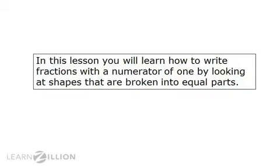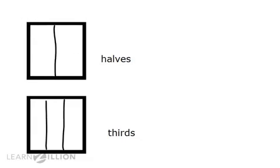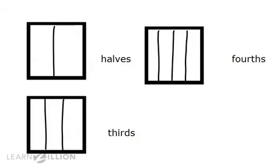When we break something into two equal parts, we call the fractions halves. When we break something into three equal parts, we say it's broken into fractions called thirds. When we break something into four equal parts, we say it's broken into fractions called fourths, and so on.